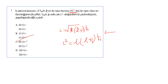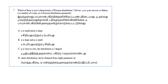So option C is the correct answer. The next question: which of these is NOT a characteristic of Poisson distribution?